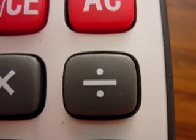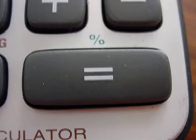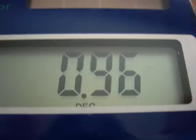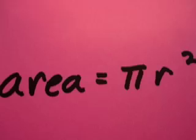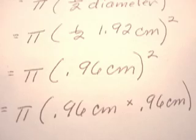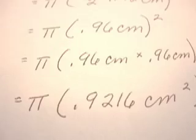1.92 divided by 2 is going to be equal to 0.96. Let's remember what this 0.96 is. We had found the diameter, and now we've found the radius with the 0.96. And now we have to square the radius. 0.96 times 0.96 is going to be 0.9216 centimeters squared.